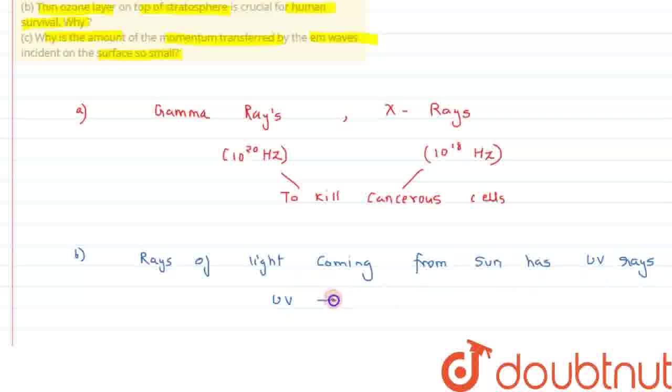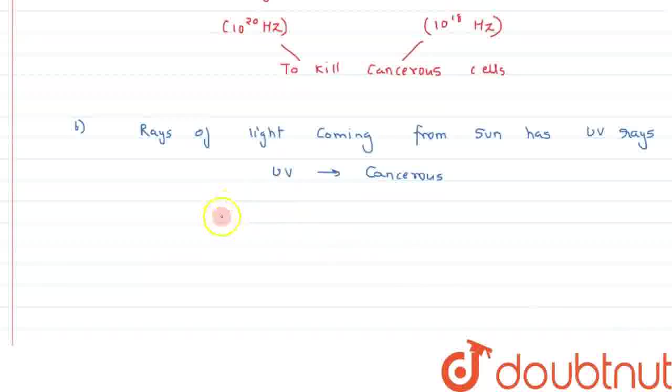So, we can say due to this UV rays, it is cancerous in nature. So, there is a shield present above stratosphere that is known as ozone layer. And this ozone layer absorbs this UV rays. And thus, saves us, or we can say saves humans from getting exposed to UV rays. And thus, it protects human survival on Earth.